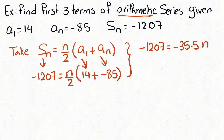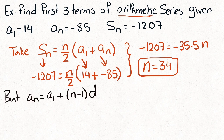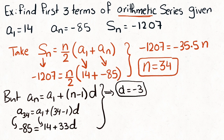Once you find n, go back and use a_n = a1 + (n − 1) × d to find d. With n = 34, replace the known values, find d, then starting from a1, apply d successively to each new term to get the first three terms.